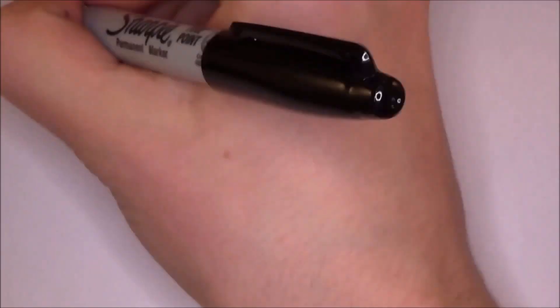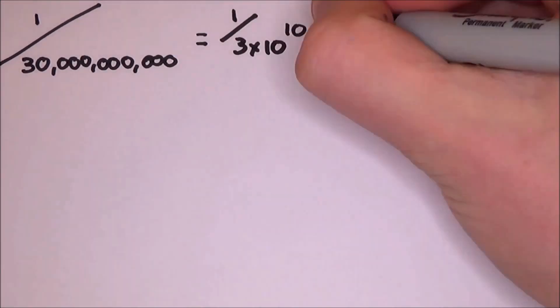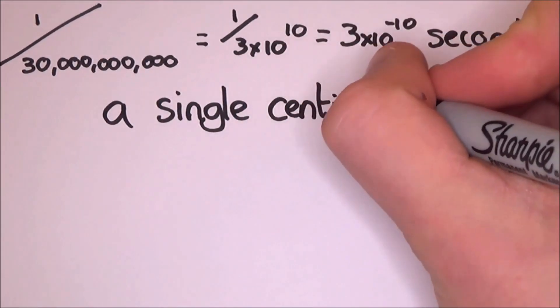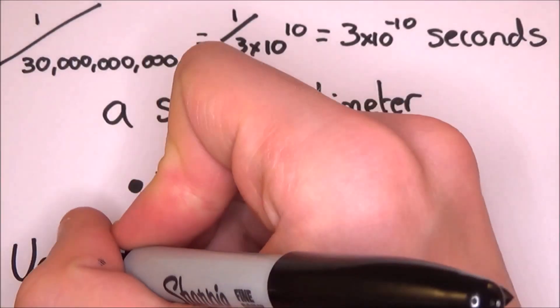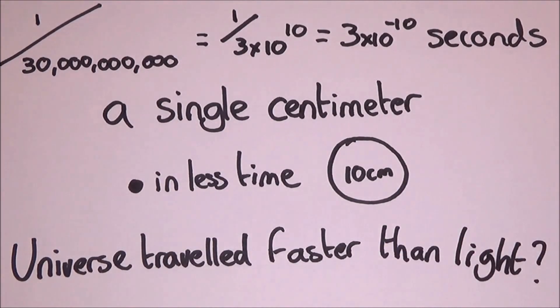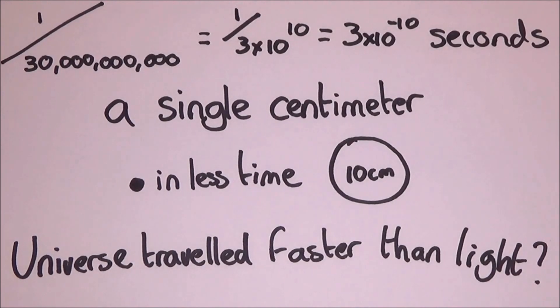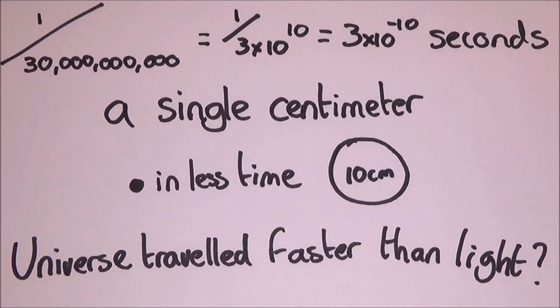However, there is one problem. Light takes 30 billionths of seconds to travel a single centimeter, yet the universe expanded from a lot smaller than a proton to about 10 centimeters across in less time. So the universe expanded quicker than the speed of light. That might be a problem as nothing can travel faster than the speed of light. It's the cosmological speed limit. But it is possible because it's space-time itself which was expanding. That means that nothing in the universe was moving faster than the speed of light. It was the fabric of the universe.